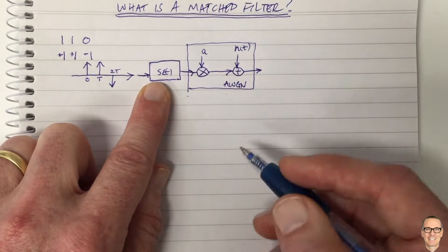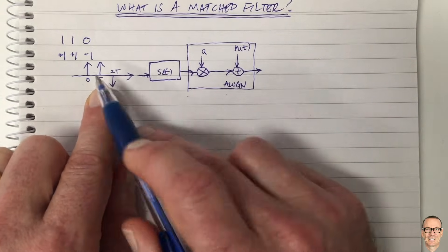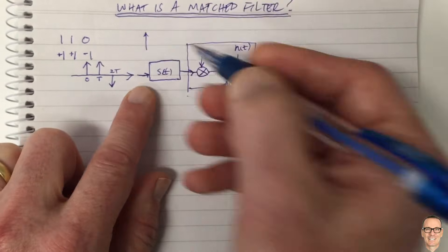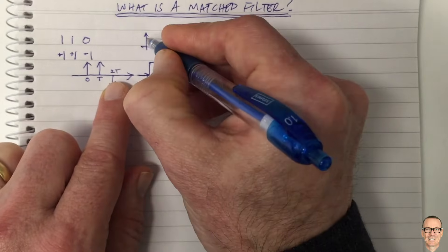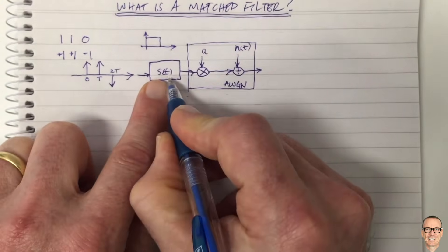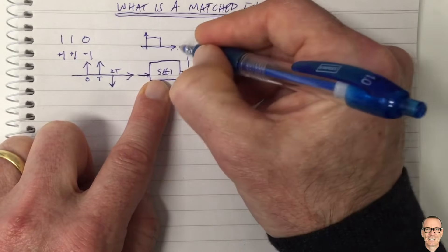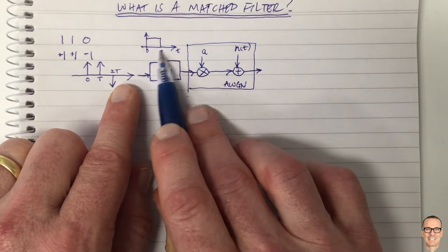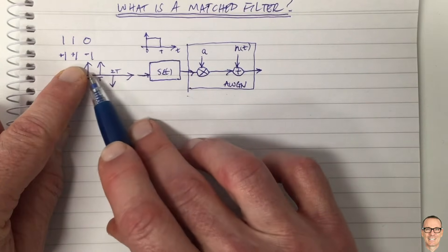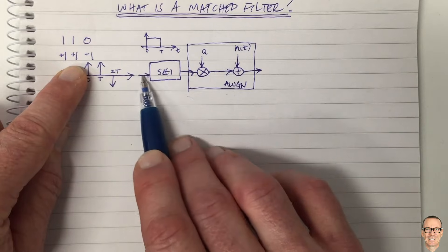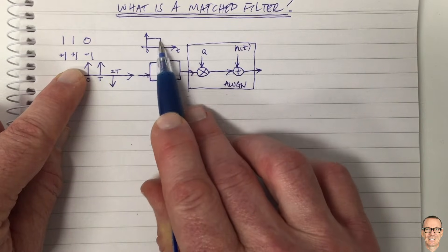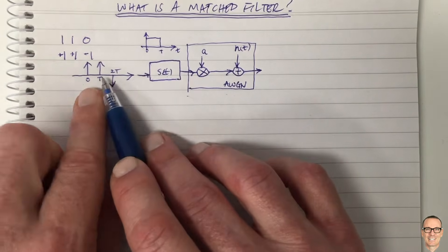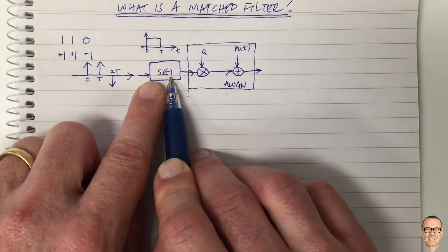We need to send a signal for a period of time T, and we're going to send a positive version of it or a negative. The impulse response — here's one example — might be a square wave that lasts for time T. So if our filter had an impulse response that looked like this, then we would be sending a square waveform every time we hit it with an impulse. If it's a positive impulse, we send a positive pulse; if it's a negative impulse, we send a negative pulse. These impulses are convolved with the transmit filter.